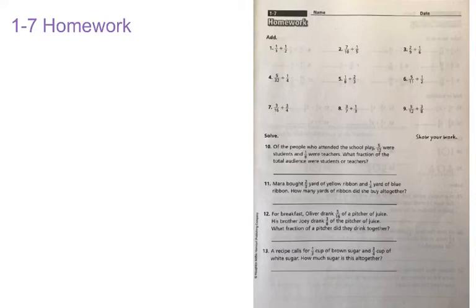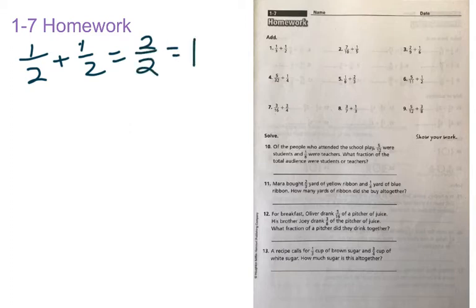Good morning class. Today we're working on adding fractions again, but today we're going to talk about adding fractions with unlike denominators. We've been working on adding fractions with a common denominator, such as 1 half plus 1 half, and that's equal to 2 over 2, or it's equal to 1.